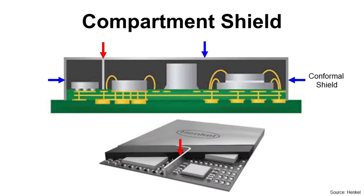How about compartment shield? It is to make a compartment for EMI shield, because even within the same package, one device can damage the other. Compartment shield is located inside of the package, and red arrows indicate compartment shield. Typically, compartment shield is used together with conformal shield, shown by blue arrows.